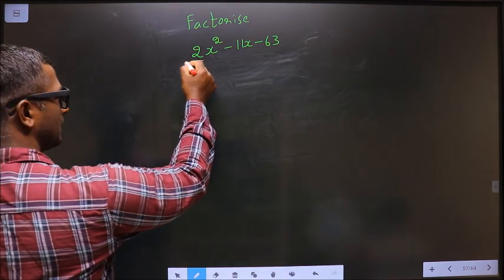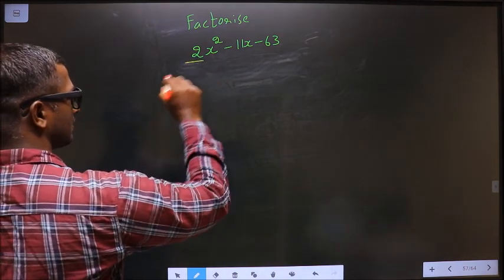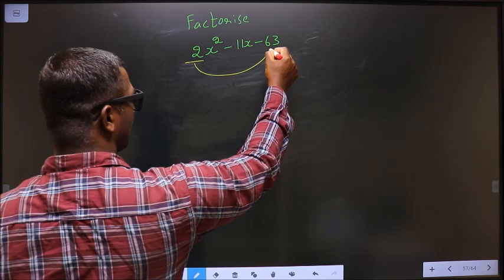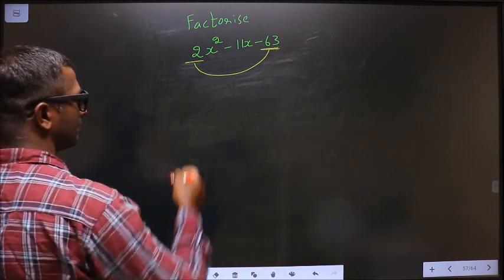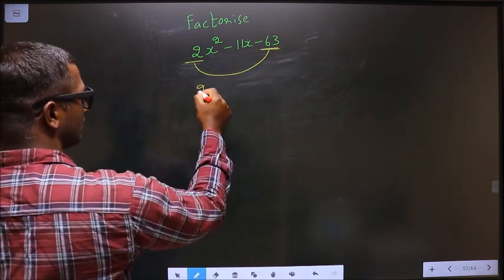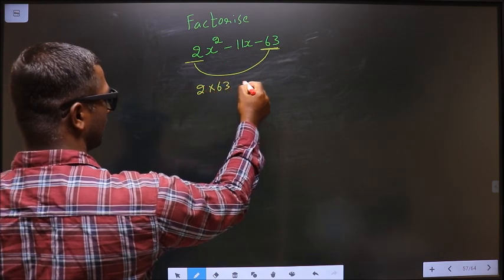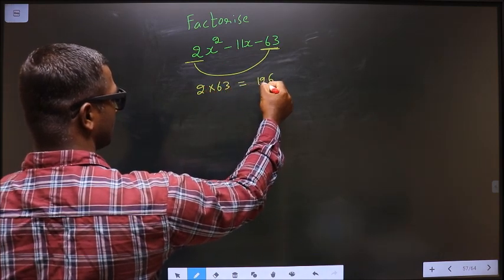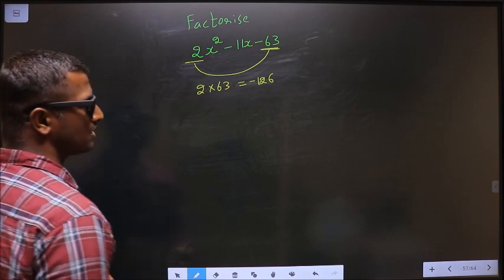The x square coefficient, which is 2 in this case, should be multiplied to the constant that is minus 63. So 2 into 63, you get 126. You get minus 126.